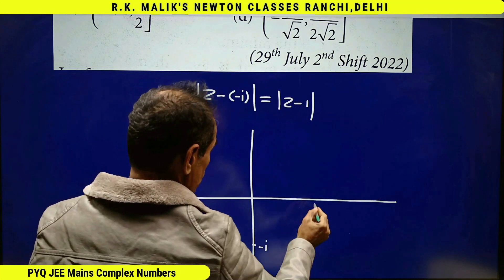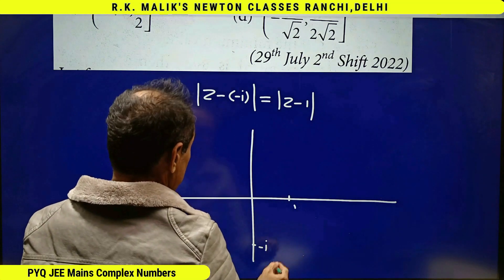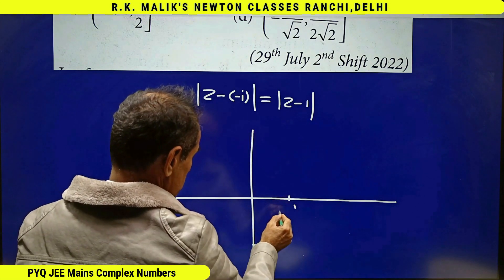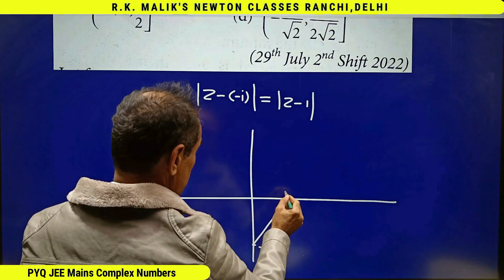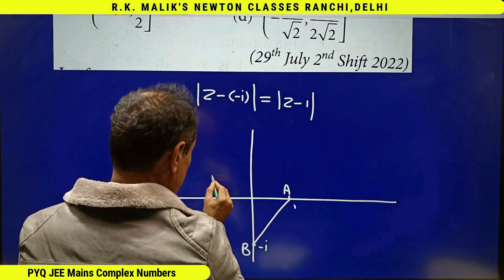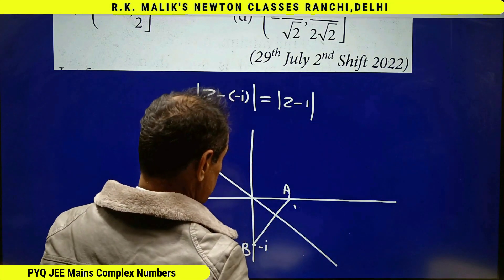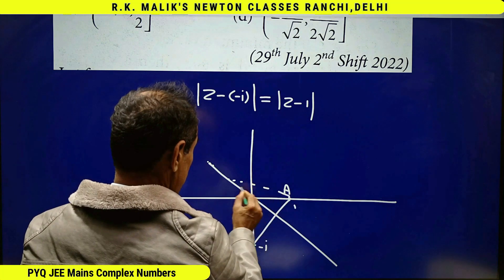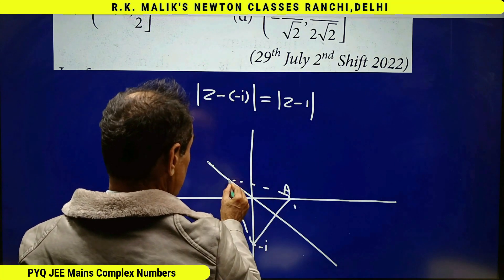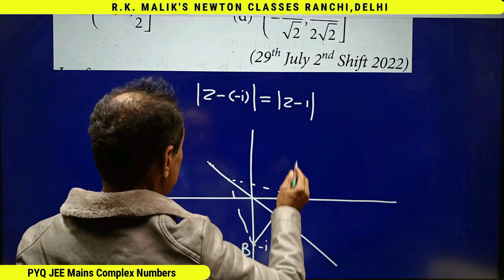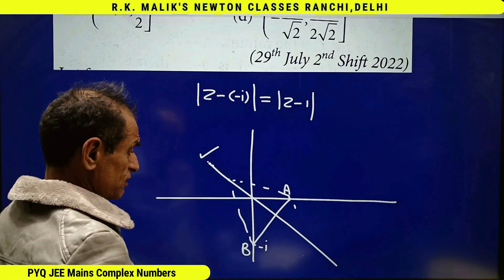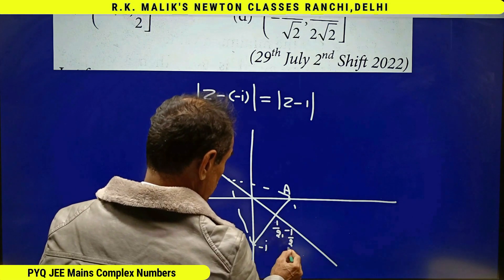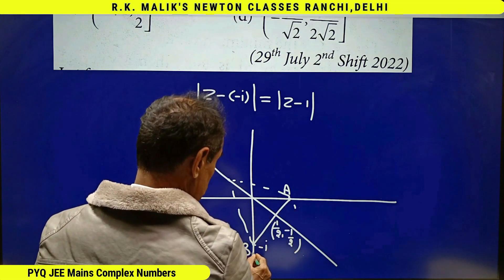Minus i is somewhere here and 1 is somewhere here. I want the complex numbers equidistant from minus i and 1. For this, I draw the perpendicular bisector of the line joining A and B. For all points on this line, the distance from A equals the distance from B. This equation represents that line, which passes through the midpoint (1/2, minus 1/2), since the two points are (1, 0) and (0, minus 1).